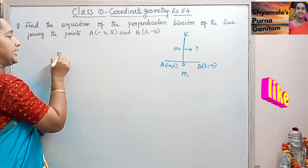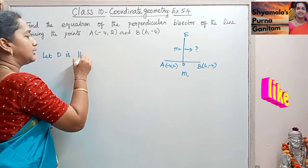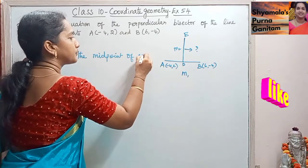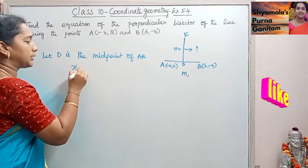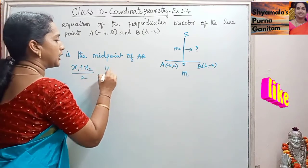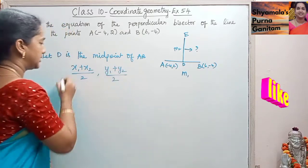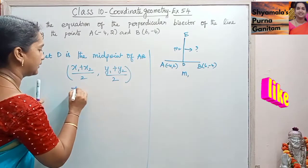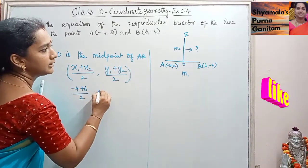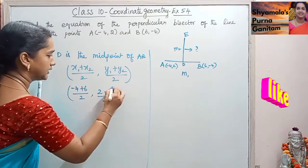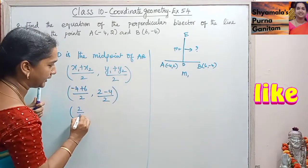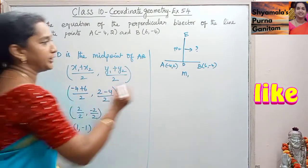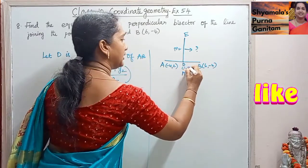Let D be the midpoint of AB. The midpoint formula gives us (X1 + X2)/2, (Y1 + Y2)/2. This equals (-4 + 6)/2, (2 - 4)/2, which is 2/2, -2/2. So D = (1, -1).